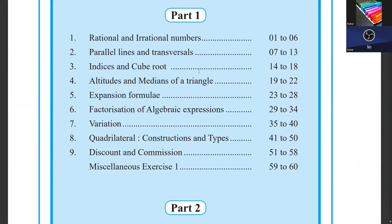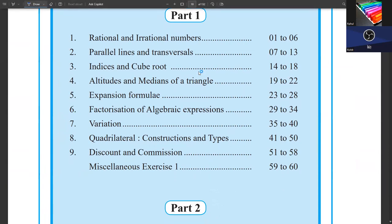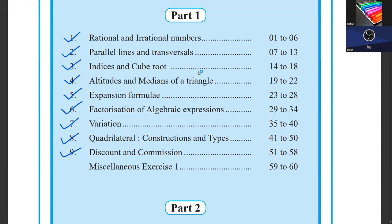We have already covered rational and irrational numbers, second chapter parallel lines and transversals, third chapter indices and cube root, then altitude and medians of a triangle, fifth is expansion formulae, sixth is factorization of algebraic expressions, seventh variations, eighth quadrilateral construction and types, and ninth discount and commissions. That we have covered and you have given the first semester exam.